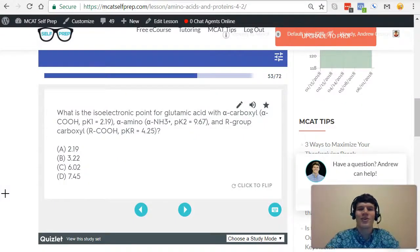Alright, so what are we trying to accomplish in this question? It's asking us to calculate the isoelectronic point for a specific amino acid, glutamic acid, and it gives us the pKa values for this amino acid. Before we can really do anything with these pKa values, first we need to understand what an isoelectronic point even is.